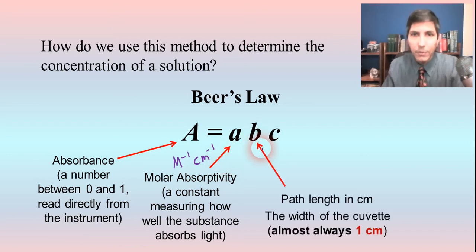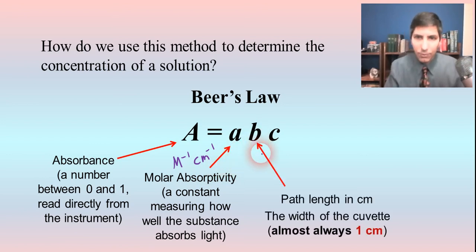Now, the value for B. The B is the path length through which the light is passing through the sample. And that's in centimeters. And that's the width of the cuvette. Now, almost always, it's going to be one centimeter. And that's because when you purchase these cuvettes from the company that makes them, they're probably always going to be one centimeter.